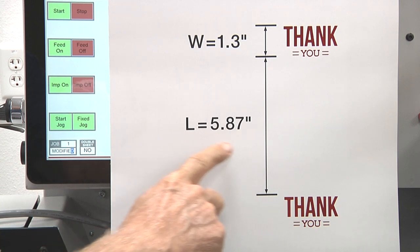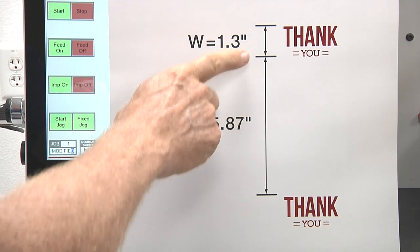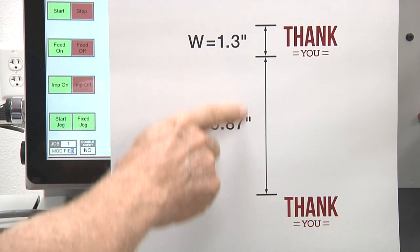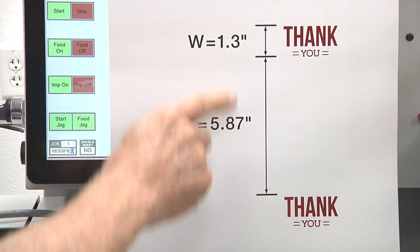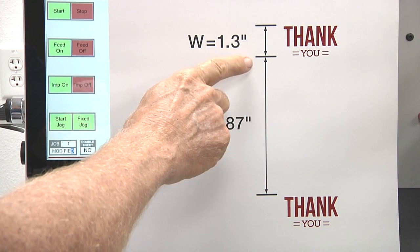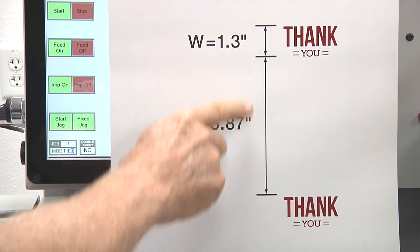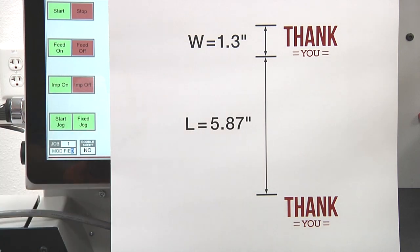The L value represents the space between the two image areas. This dimension is measured from the bottom of the upper image area to the top of the bottom image area.